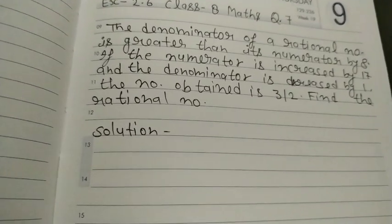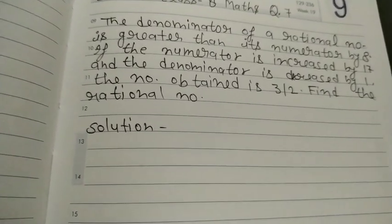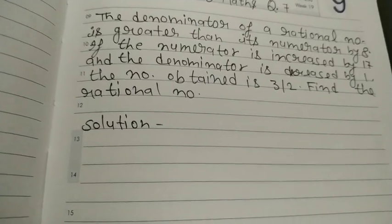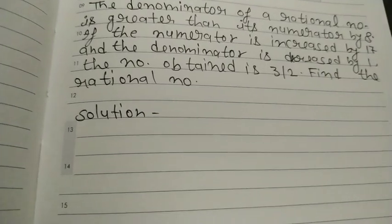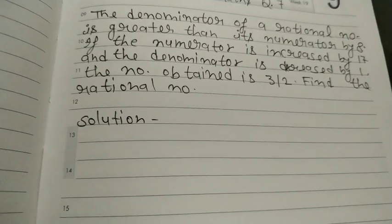The question is: the denominator of a rational number is greater than its numerator by 8. If the numerator is increased by 17 and the denominator is decreased by 1, the number obtained is 3 upon 2. Let's find the rational number.